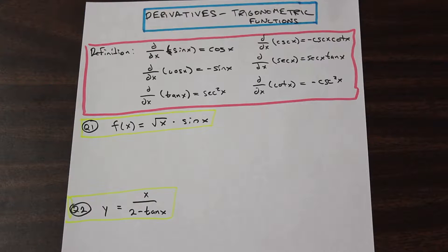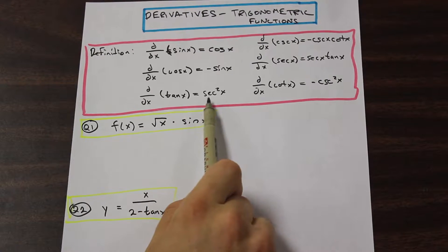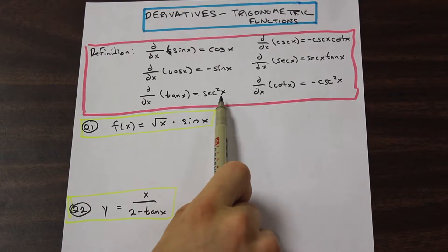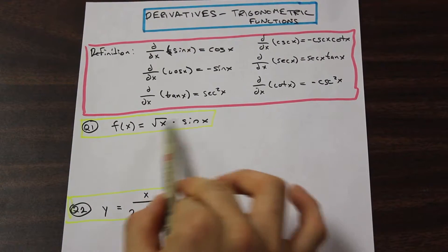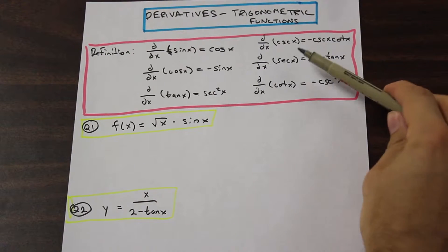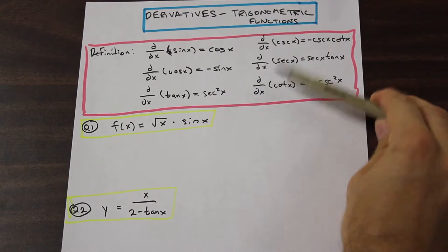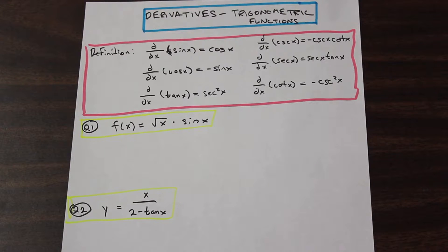That's something you'll just have to get used to. This one below here: the derivative of tan x is equal to secant squared x. Just memorize that — you don't really need to understand the derivation per se. And over here we have a different set of functions: cosecant, secant x, and cotangent x.